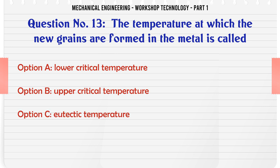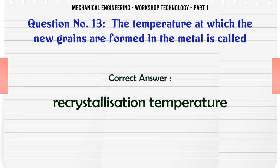The temperature at which new grains are formed in the metal is called: A. Lower critical temperature. B. Upper critical temperature. C. Eutectic temperature. D. Recrystallization temperature. The correct answer is: D. Recrystallization temperature.